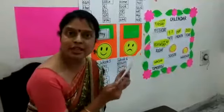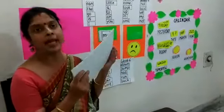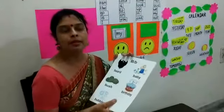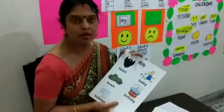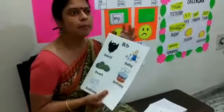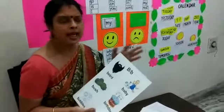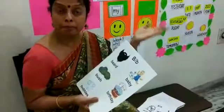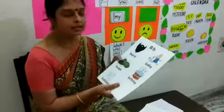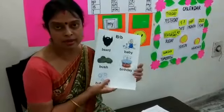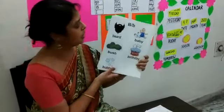Now the B story — Bubble Bear. Bubble Bear was the best bear in town. He used to make itsy-bitsy bubbles. He made bubble birthday cakes, bubble beasts, and so many things. So here are the vocabulary words from the B story.